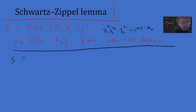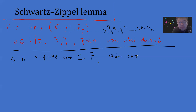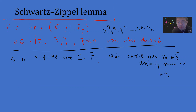Then take S to be a finite subset of F. You randomly and independently choose r1, r2, up to rn from S. This means you choose r1 from S uniformly at random, r2 from S uniformly at random, and so on up to rn, all independently.